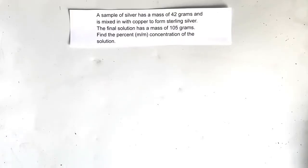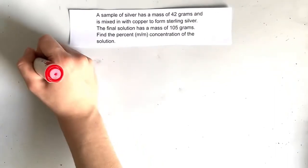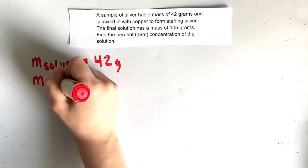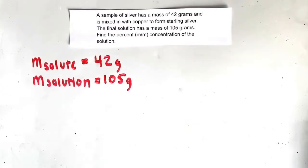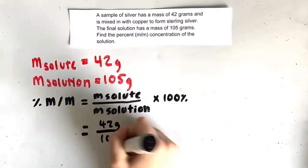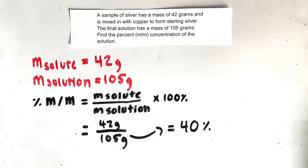Let's try an example. A sample of silver has a mass of 42 grams and is mixed in with copper to form sterling silver. The final solution has a mass of 105 grams. Find the percent m/m concentration of the solution. We are given the mass of the solute, which is 42 grams, and the mass of the final solution, which is 105 grams. Plugging that into our equation gives us an answer of 40 percent.